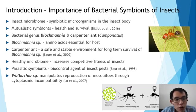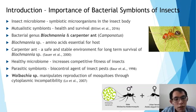In contrast, the parasitic symbionts could be used as a biocontrol agent or insecticide. An example of this is the bacterium Wolbachia, which could manipulate the reproduction of mosquitoes through cytoplasmic incompatibility.